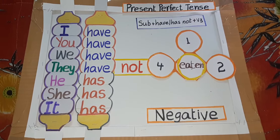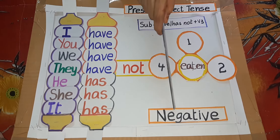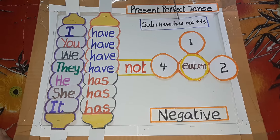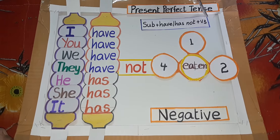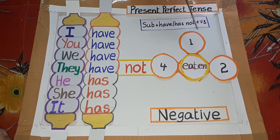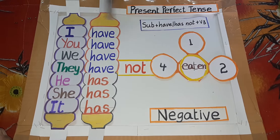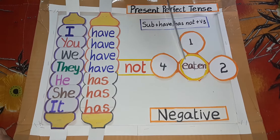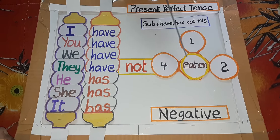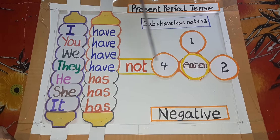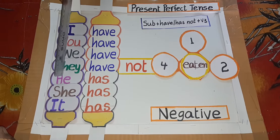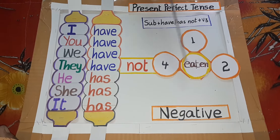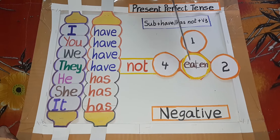Present Perfect Tense Negative: Subject plus have or has not plus third form of verb. I have not eaten, you have not eaten, we have not eaten, they have not eaten, he has not eaten, she has not eaten, it has not eaten.